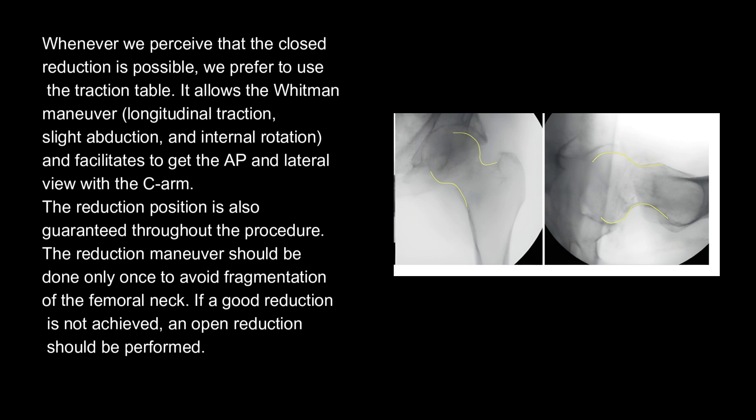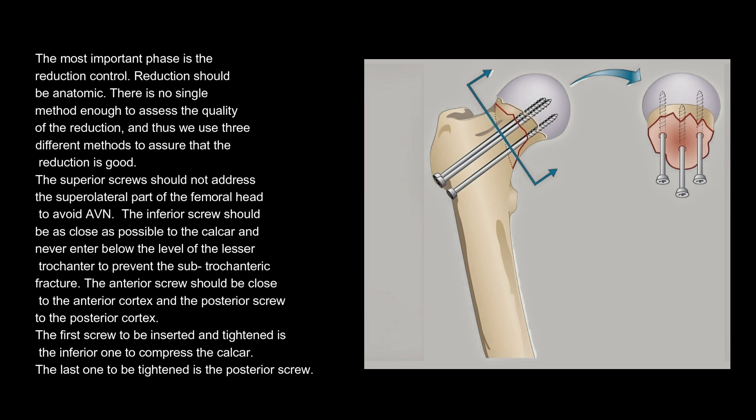The reduction maneuver should be done only once to avoid fragmentation of the femoral neck. If a good reduction is not achieved, an open reduction should be performed. The most important phase is the reduction control — reduction should be anatomic. There is no single method sufficient to assess the quality of reduction, and thus we use three different methods to assure that the reduction is good.